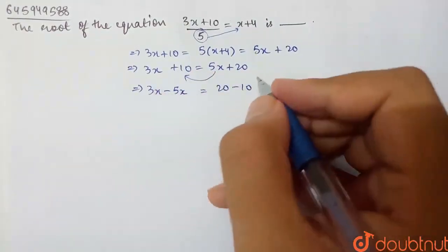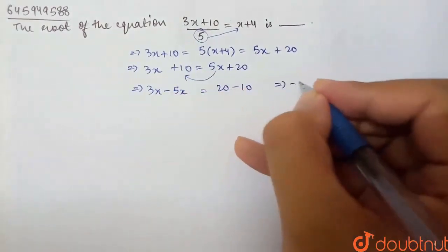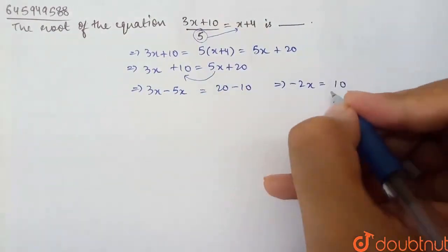Here, what will I have to do? 3x minus 5x is minus 2x, which equals 20 minus 10, which is 10.